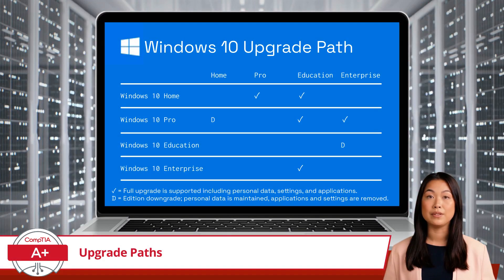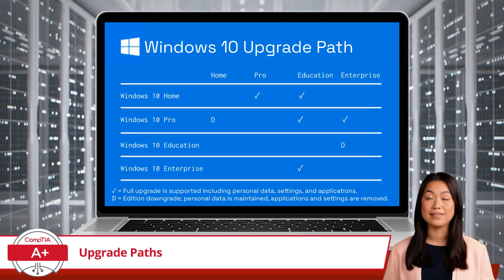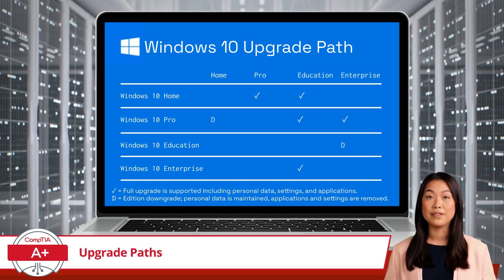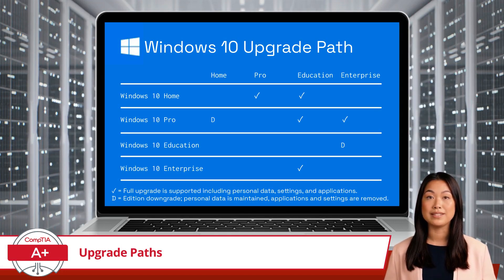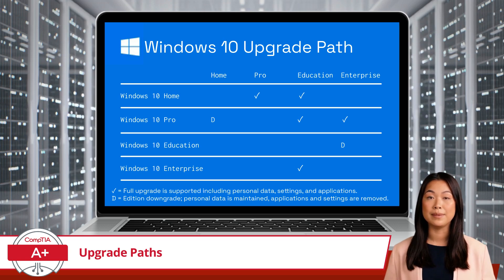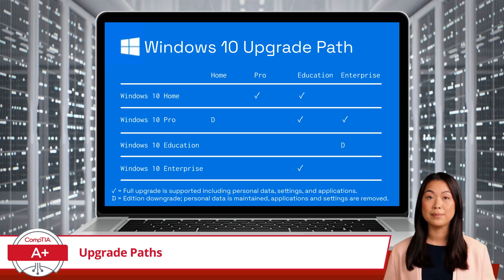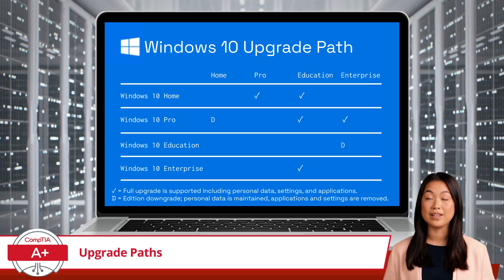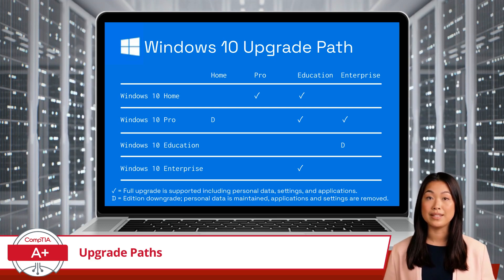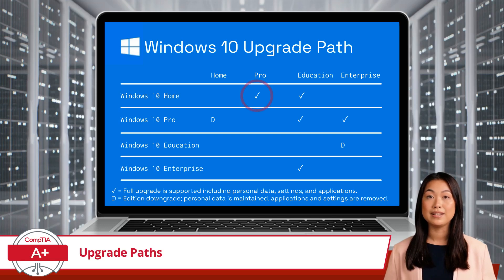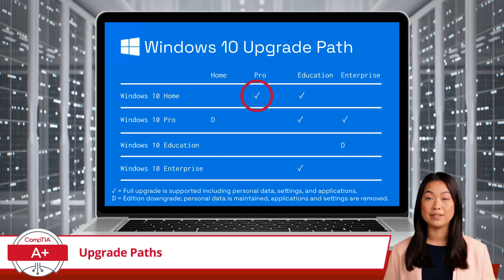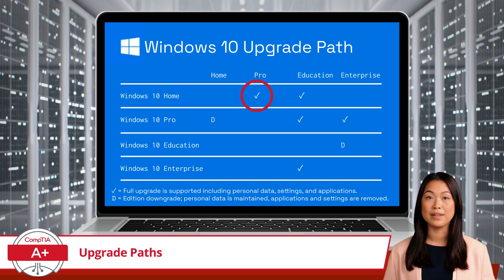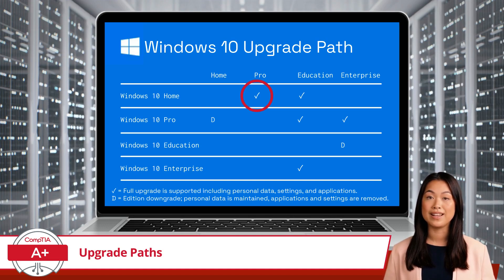As for those who are already using Windows 10, the lookup tables can also be used when switching to a different edition of Windows 10. A perfect example would be using this table to determine if an in-place upgrade is supported when transitioning from Windows 10 Home Edition to Windows 10 Pro. By consulting the appropriate lookup table, we can confirm that an in-place upgrade is indeed possible for this scenario.